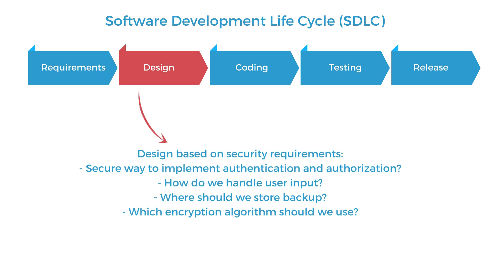The next step is to plan the application design around the security requirements — taking the security requirements listed in the requirements phase and figuring out how to design the application around them. In this phase, we're typically asking questions like: how should we implement authentication and authorization to ensure security? How should we handle user input safely? What kind of input validation should we use on different types of input? Where do we back up code and data? What kind of encryption protocols should we use to store and transport data safely? The key is to design the app securely by considering its security requirements alongside its functional ones.